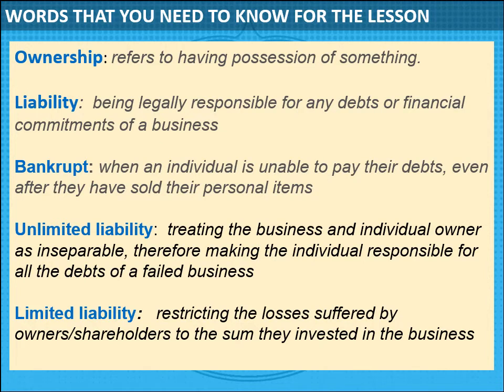There are some words we're going to need for the lesson today that you might not have heard before. The first one is ownership — you probably know that one: having possession of something. For example, you are in ownership of an Oyster card. Liability — you might have heard that word before — that is being legally responsible for any debt or financial commitment of a business. There's lots of news at the moment about shops going bankrupt and who has the liability for the debt.